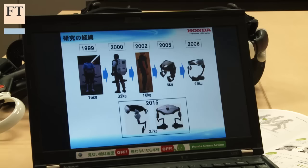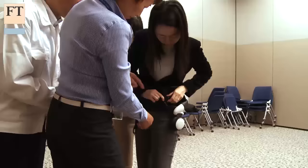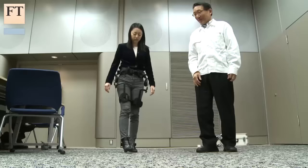By studying the human walking, we can get the walking theory to support the human by using robotics technology. So our target is an elderly person or a patient who suffered from a stroke.